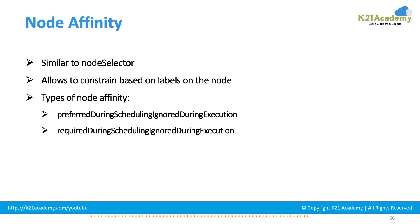Node affinity is similar to node selector but it has a better way of expressing constraints. You can write more expressive expressions and you can have both a soft type of constraint and a hard type of constraint. You are defining a constraint saying that your pod is required to be placed in a specific labeled node, or preferred to be placed in one. There are two types of node affinity.